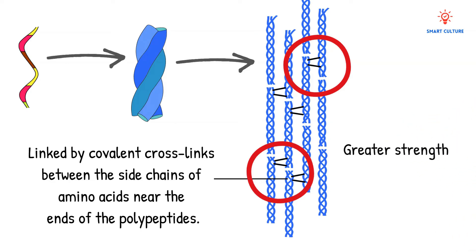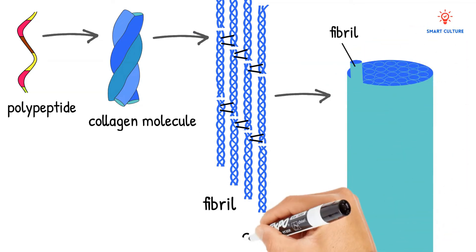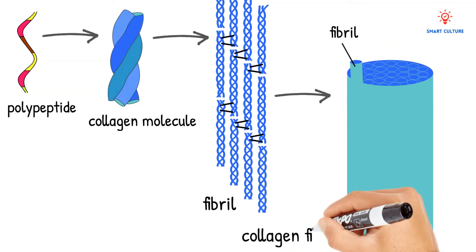Many triple helices lying parallel with one another are collectively called a fibril, and many of these fibrils lying side by side then make up a collagen fiber. Collagen fibers are lined up in different structures according to the forces they must withstand.